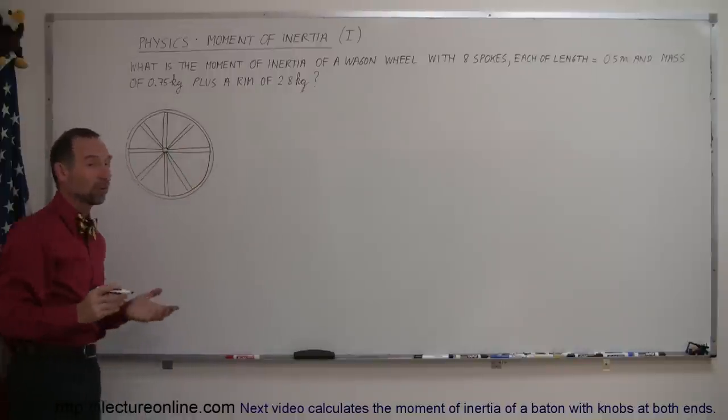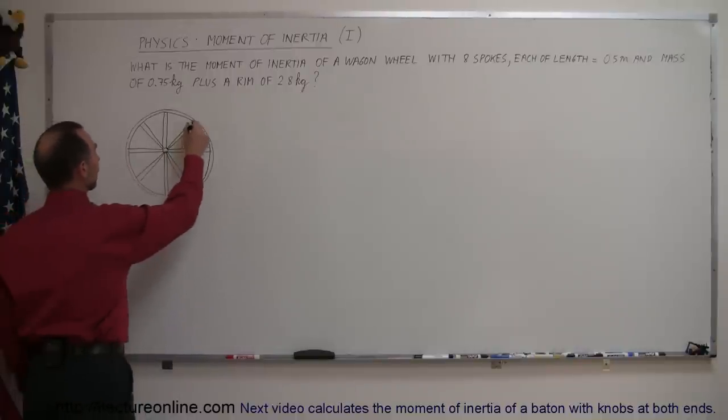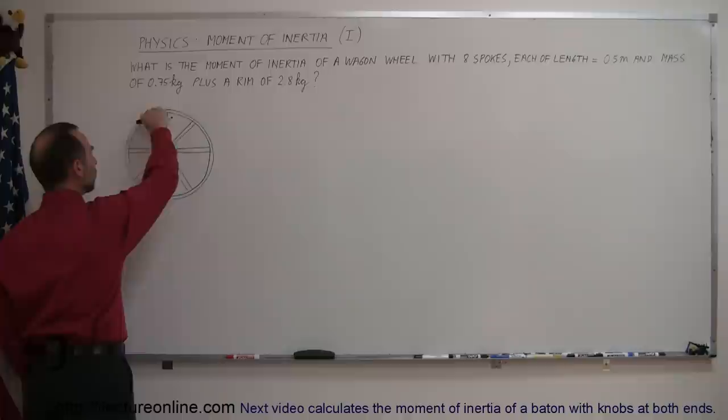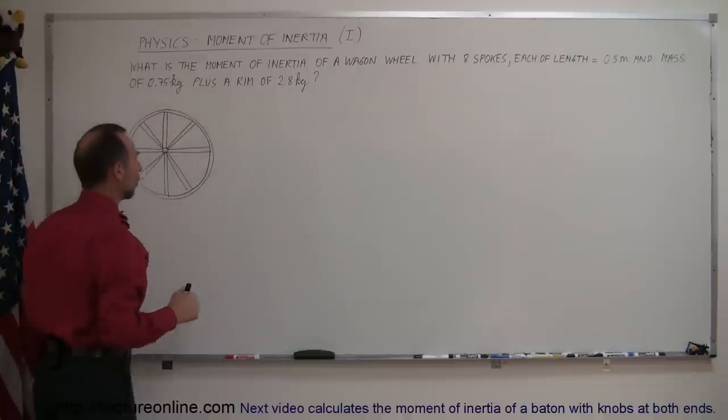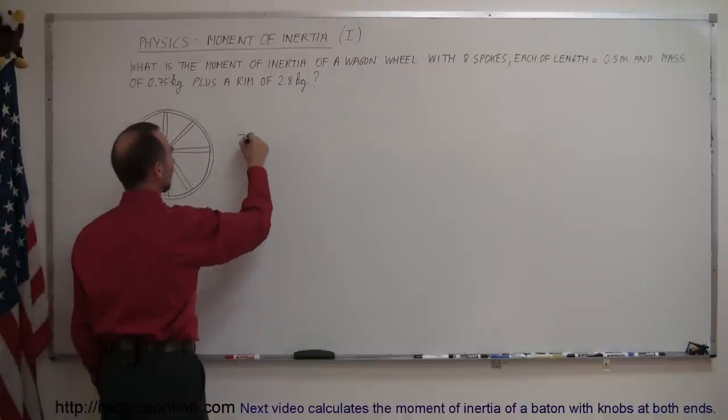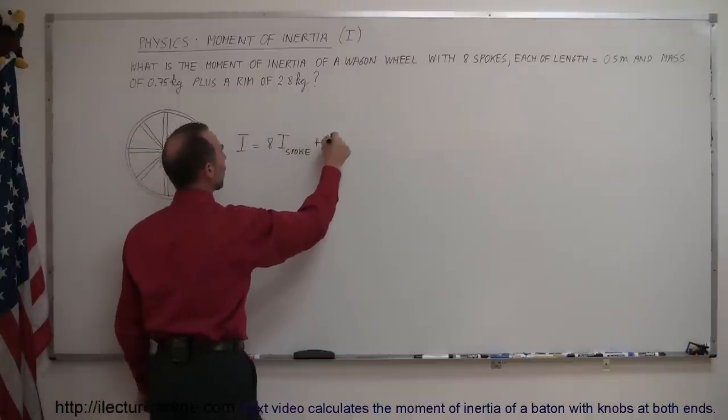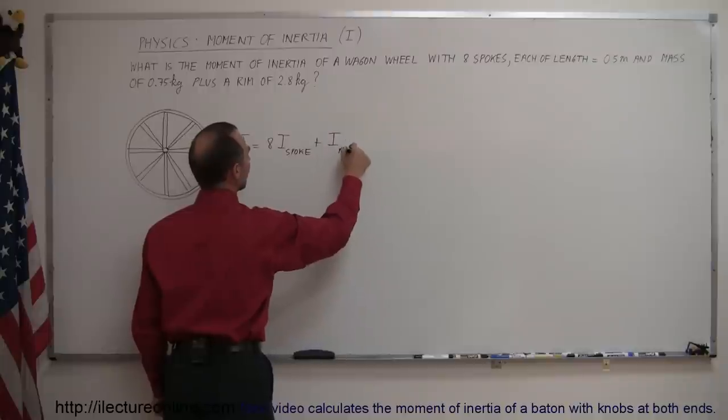Okay, so what's the moment of inertia of this? Well, you need to recognize that it's going to be the moment of inertia of each of the eight spokes added to the moment of inertia of the rim. So we can say that I is equal to eight times the moment of inertia of each spoke plus the moment of inertia of the rim.